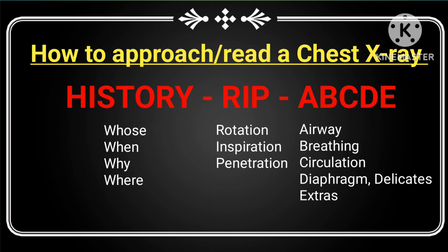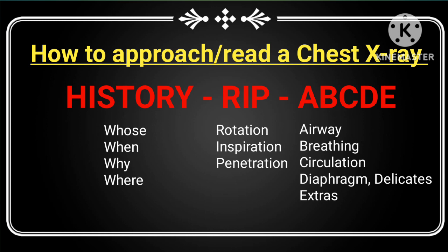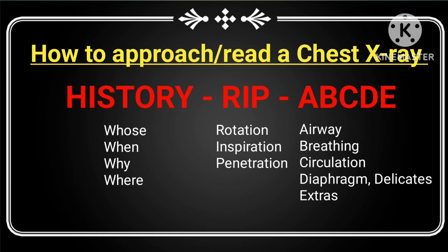In the History section, you should ask: whose X-ray is this — make sure you are not examining another patient's X-ray. When was it done — in the pre-op or post-op period, and ask if any previous X-ray is available. Why was it done — for medical fitness or presence of symptoms. Where was it done — in ICU (most commonly AP view) or radiological department (most commonly PA view).